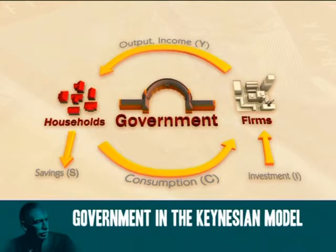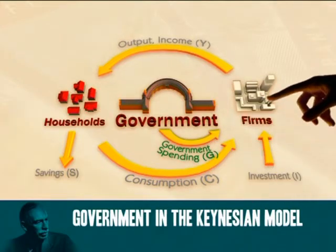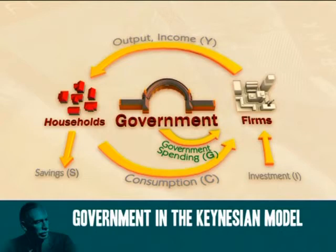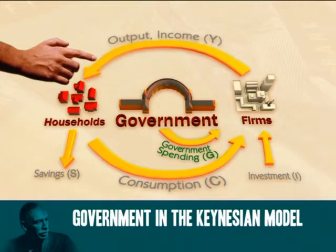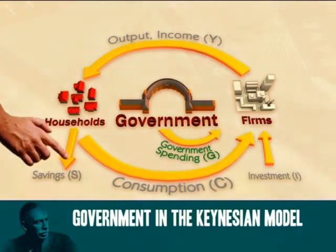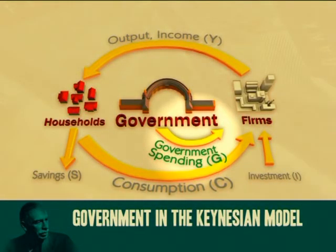As the government orders more goods and services, firms respond by increasing output to meet this need, so the level of production rises. More factors of production are employed, so household income increases, which in turn leads to higher consumption spending, sparking even more production, even higher incomes, and further spending.